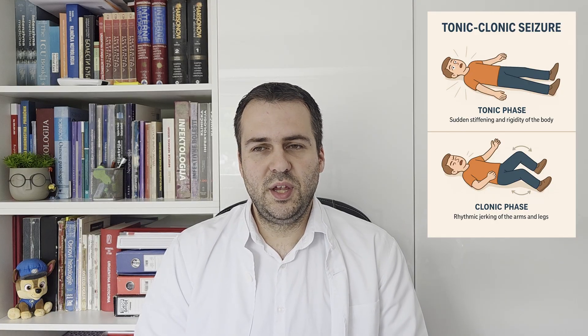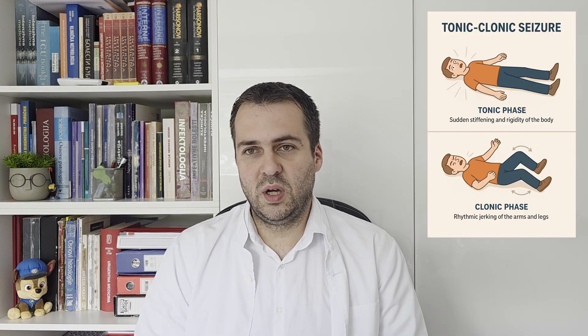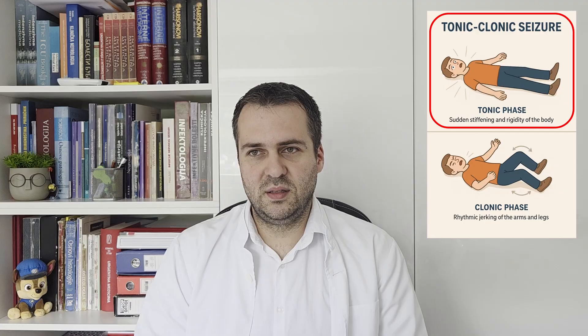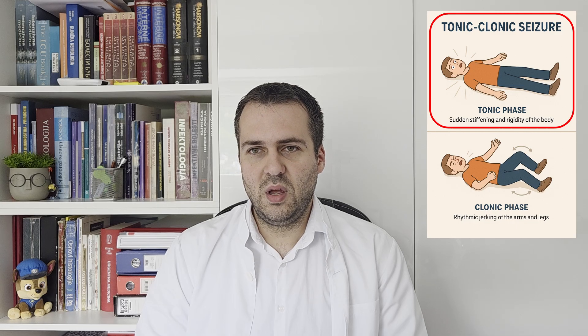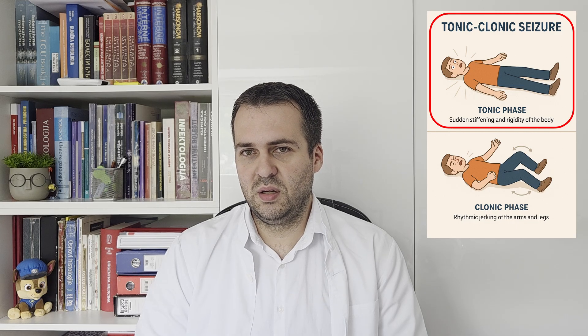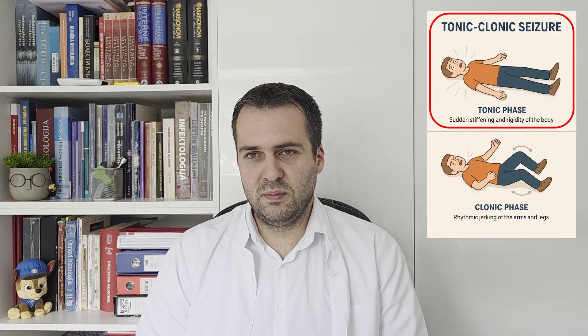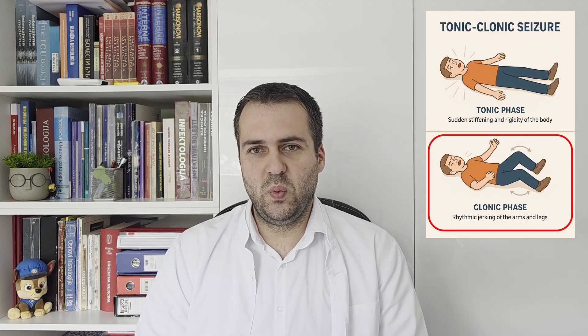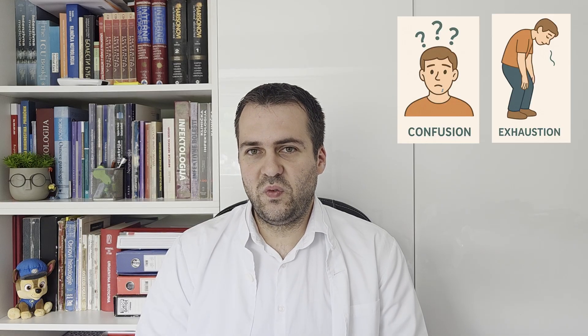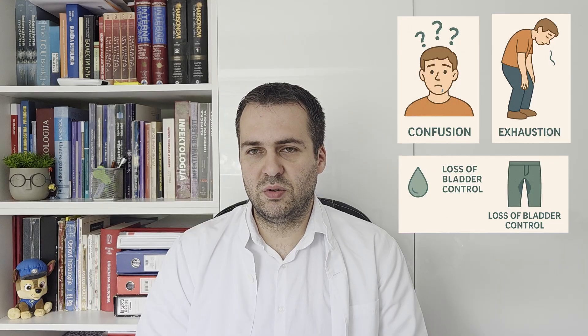Generalized tonic-clonic seizures usually happen suddenly, often without warning, and have two distinct phases. The tonic phase involves the spasm of all muscles; breathing becomes difficult and individuals might bite their tongue due to jaw muscle spasm. Ten to twenty seconds later, muscles relax, marking the beginning of the clonic phase, associated with rhythmic jerking of limbs. There is confusion, fatigue, drooling, or even loss of bladder control afterward. Myoclonic seizures are sudden jerks of part or the whole body and are often associated with other types of generalized seizures.